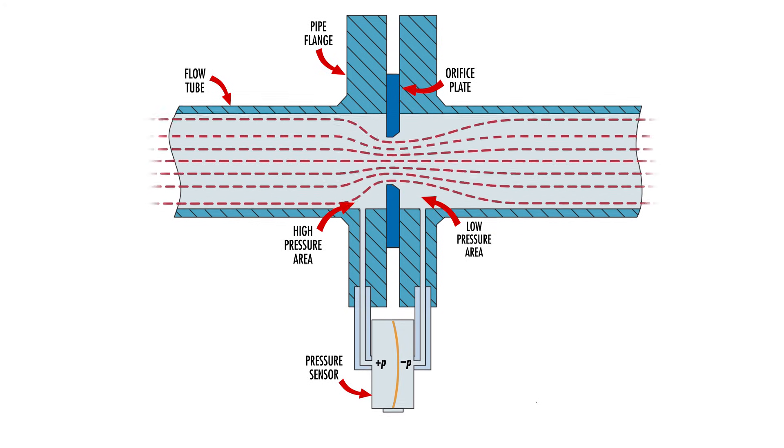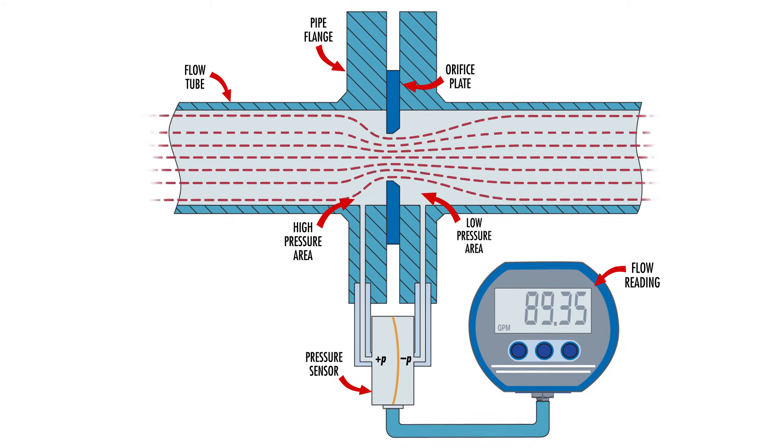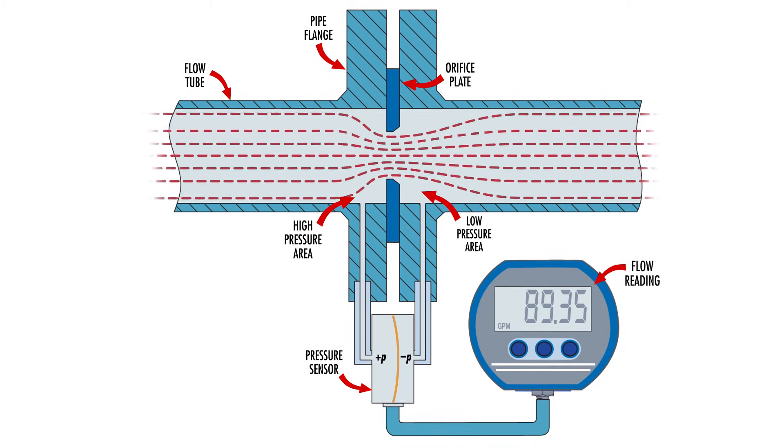The difference of pressure can be directly correlated to the flow velocity as well as the mass and volume flow of the pipe. The higher the flow velocity, the greater the differential pressure that is measured by the pressure sensor.